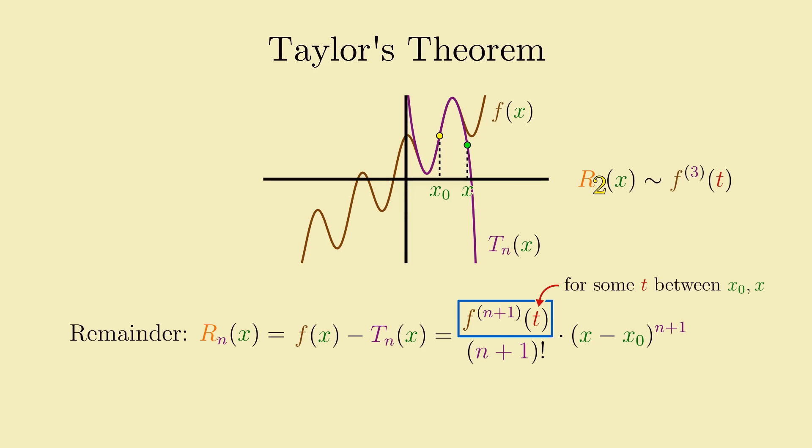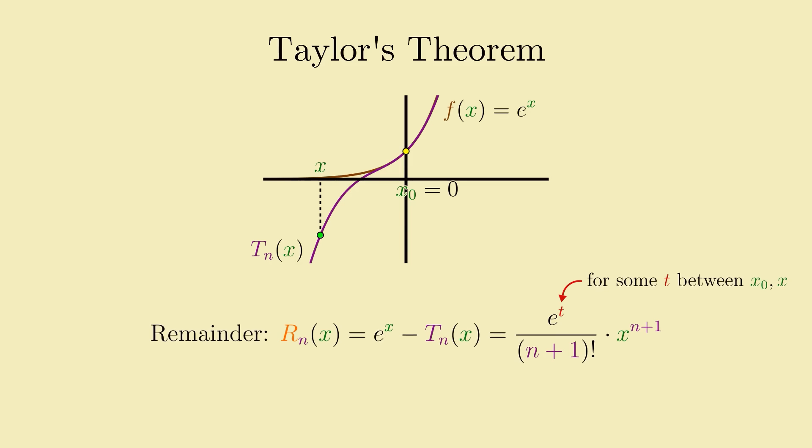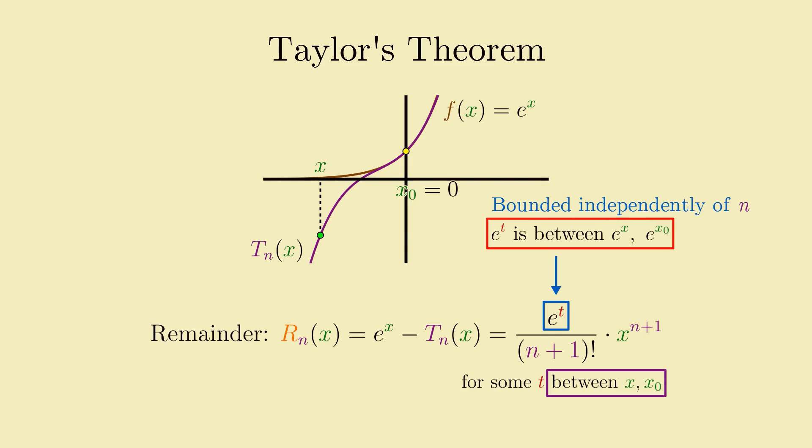So for example, the error of the second degree Taylor polynomial of f at x will depend on how large the third derivative of f gets between x and x0. In our case, where f of x is the exponential function e to the x, and the expansion point is x0 equals 0, the factor depending on the n plus 1 derivative of f just becomes e to the t, since every derivative of e to the x is just a copy of itself. The critical thing to notice about this expression is that the factor coming from the n plus 1 derivative of e to the x can be bounded independently of n. Since t is somewhere between x and x0, e to the t must be somewhere between e to the x and e to the x0, neither of which depends on n.